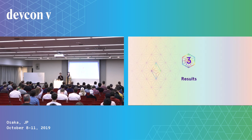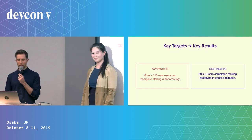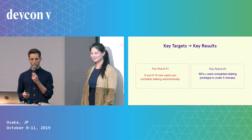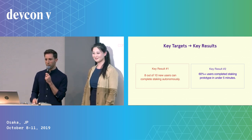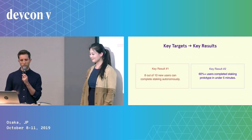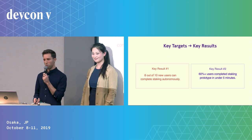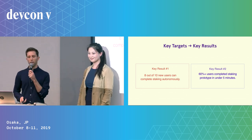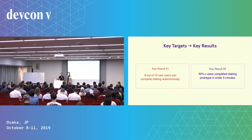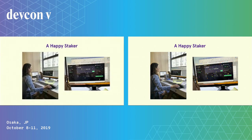Results. In our early usability testing, 8 out of 10 users were able to complete staking autonomously — really without asking any questions. And over 60% of users were able to complete staking in under five minutes. This particular staker actually completed in under one minute.